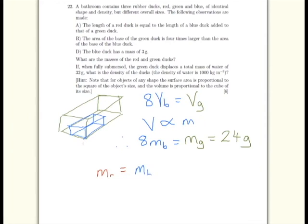So we can work out that the mass of that red duck must be equal to the mass of a blue duck multiplied by three cubed. It's three times bigger in every dimension, so it's got to be three cubed, which gives us a mass of 81 grams.